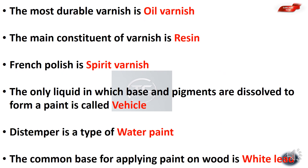The most durable varnish is oil varnish. The main constituent of varnish is resin. French polish is a type of spirit varnish. The only liquid in which base and pigments are dissolved to form a paint is called the vehicle. Distemper is a type of water paint. The common base for applying paint on wood is white lead.